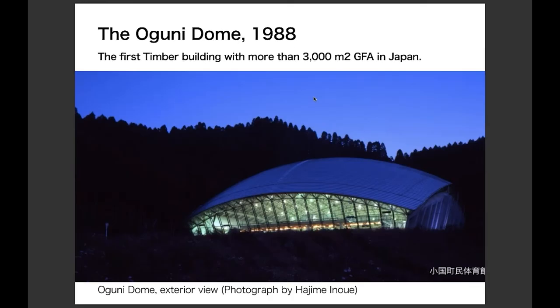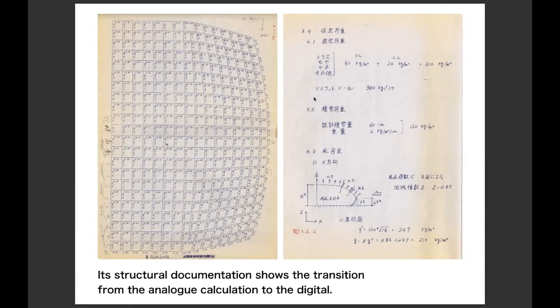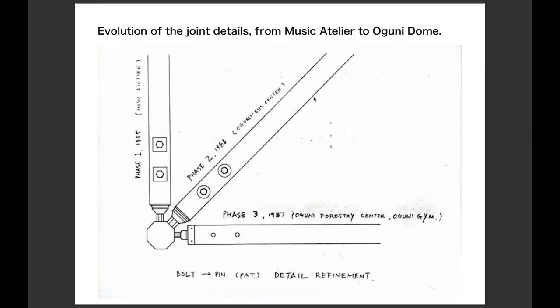Finally, in 1988, the Oguni Dome was realized — the first timber building exceeding 3,000 square meters in Japan. The structural documents of the Oguni Dome show the transition from analog to digital calculation, from manual to computational methods. Through this series of timber projects, Yo refined the joint details alongside experiments by Professor Gengo Matsui at Waseda University. This evolution of details contributed to the renaissance of timber structure in Japan at the end of the 20th century.